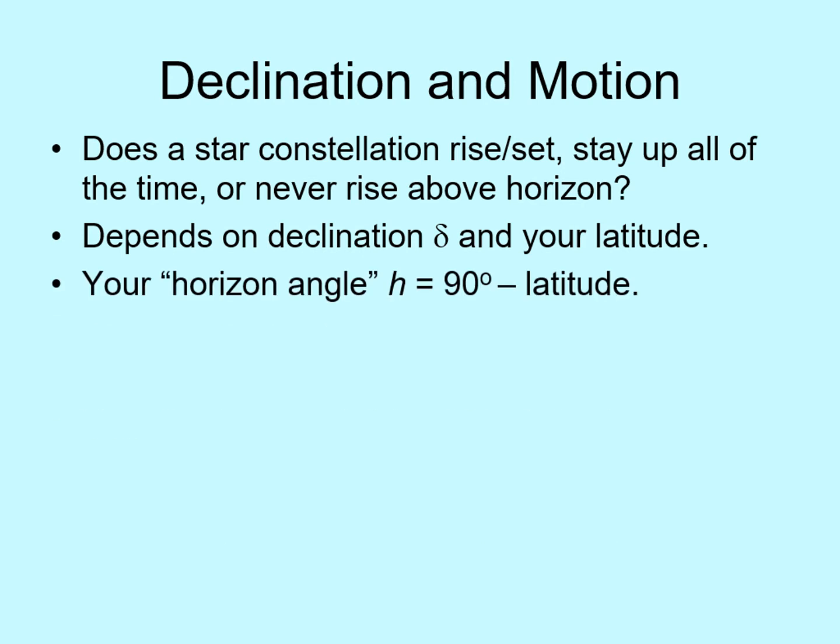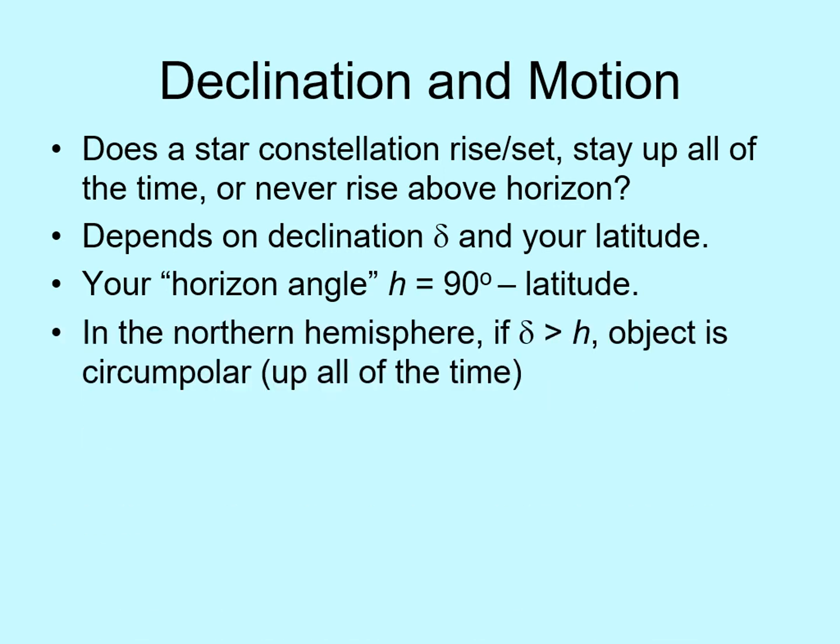First, let's define a horizon angle. This angle is 90 degrees minus your latitude. If you're in the northern hemisphere, this tells you how much of the celestial sphere you can see looking over the pole to your north. It also tells you how far south of the celestial equator you can see. So if the declination is greater than the horizon angle, then the star is circumpolar. If your latitude is high, the horizon angle will be small, and a large part of the sky will be circumpolar. On the other hand, if you're close to the equator, then the horizon angle is large, and only a small section of the sky will always stay up.